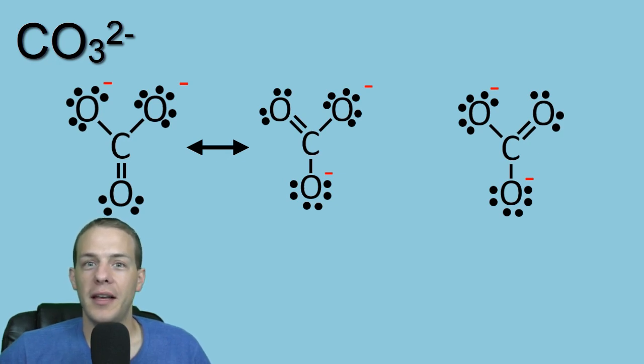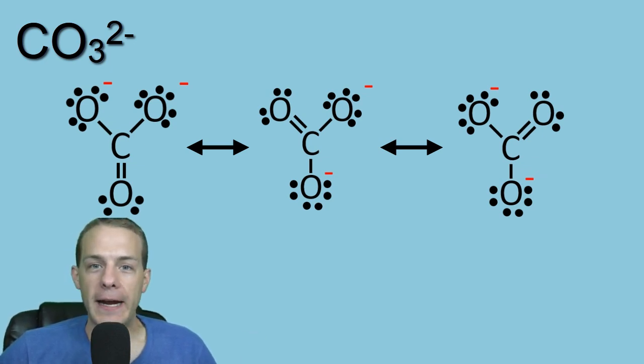So if we place again, the correct symbols between these, we'll see that we'll have our finished product, which is three resonance forms of the carbonate ion.